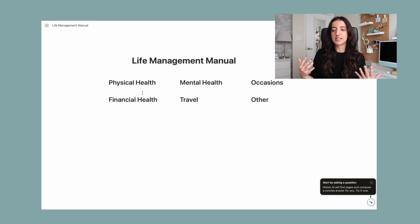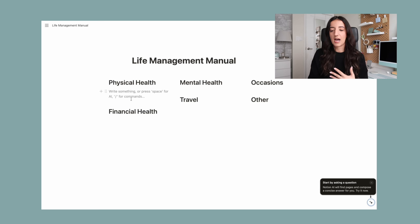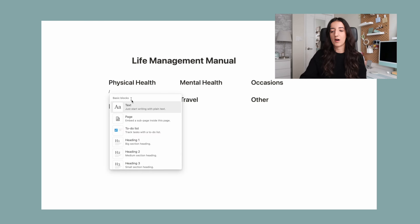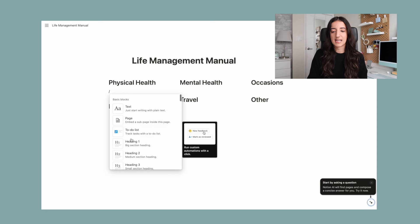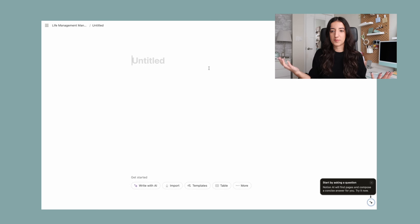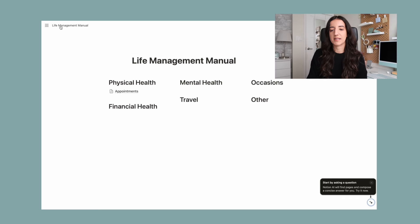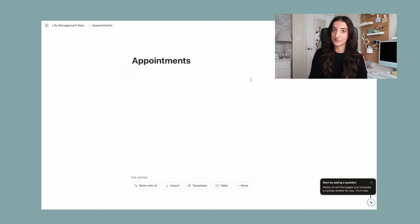Under each of these categories is where I can create new pages for more details. So in physical health, one of the things I want to track here are all of my appointments. I'm going to go underneath physical health and use the slash key on my keyboard — that's going to open up all of the things I can do here. In this case I want to create a page. As you can see, it just opens up a new blank screen, and this page is going to be called appointments. If I go back to my life management manual, now appointments is under physical health and I can click it to get taken to that page.